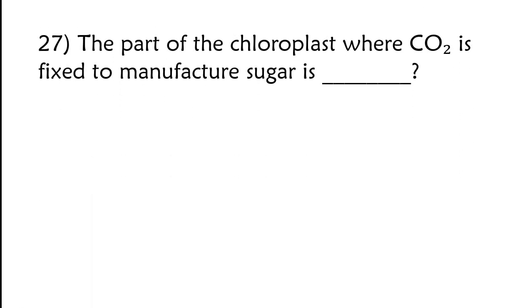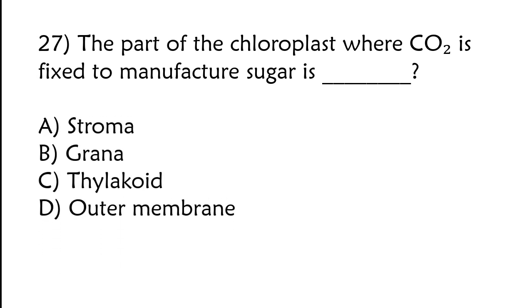The part of chloroplast where CO2 is used to manufacture sugar is stroma, grana, thylakoid, or outer membrane. The correct answer is option A, stroma.